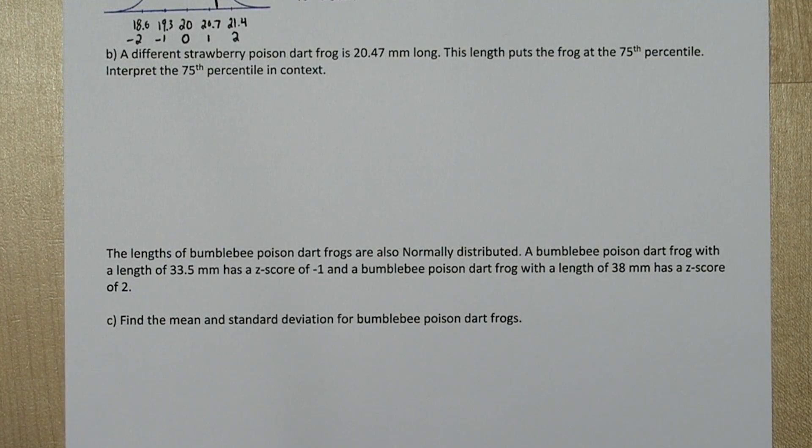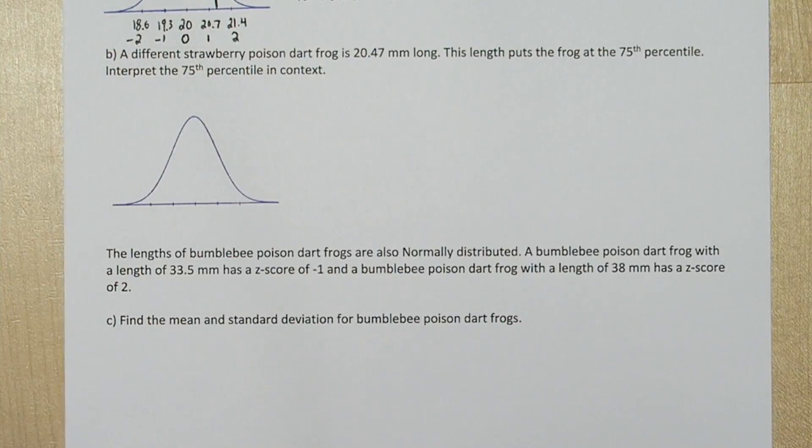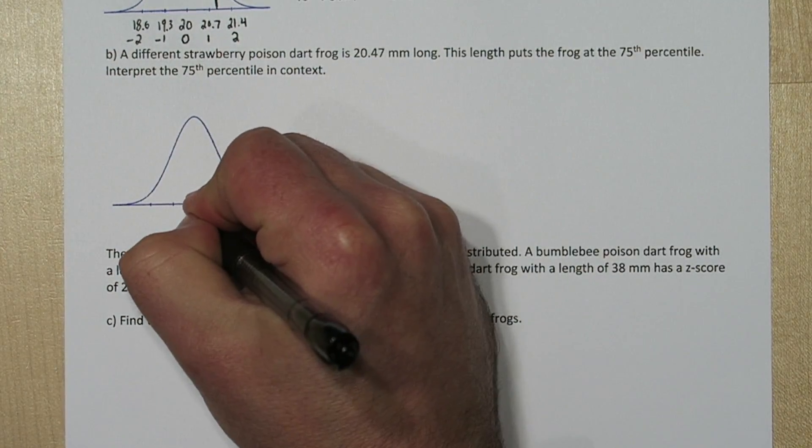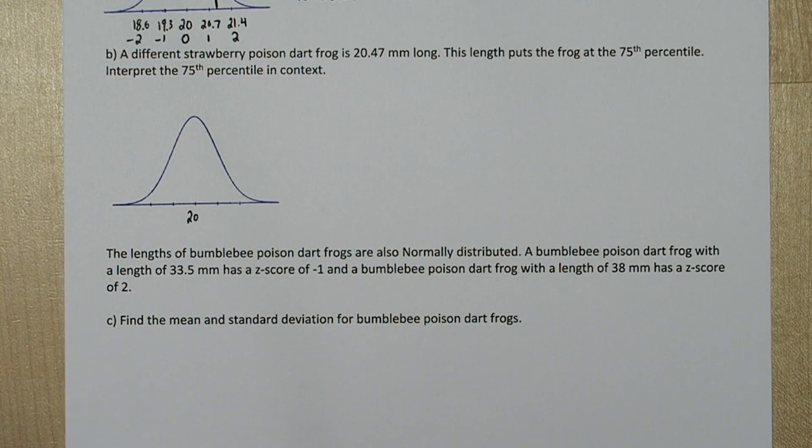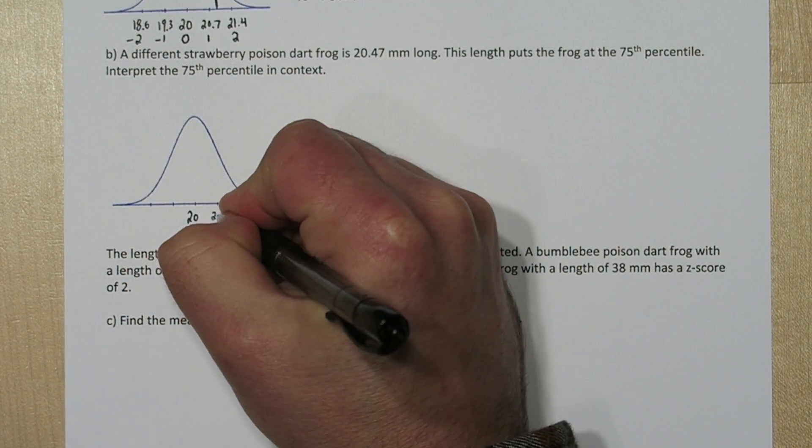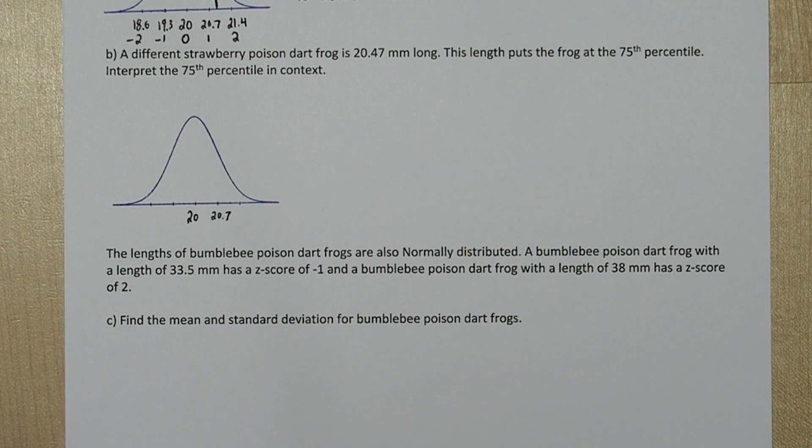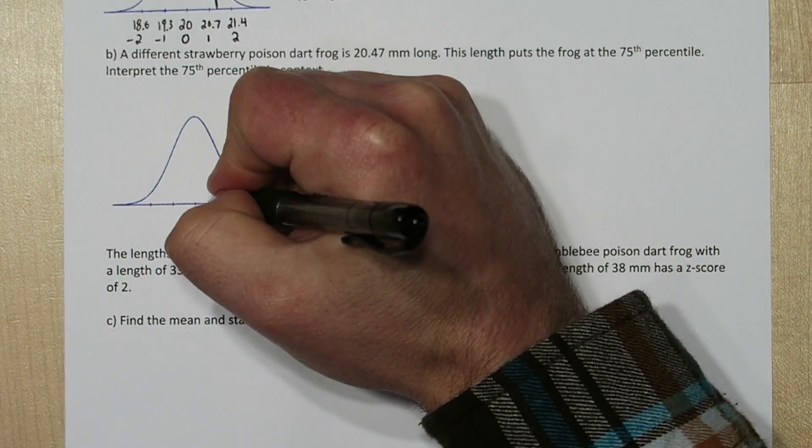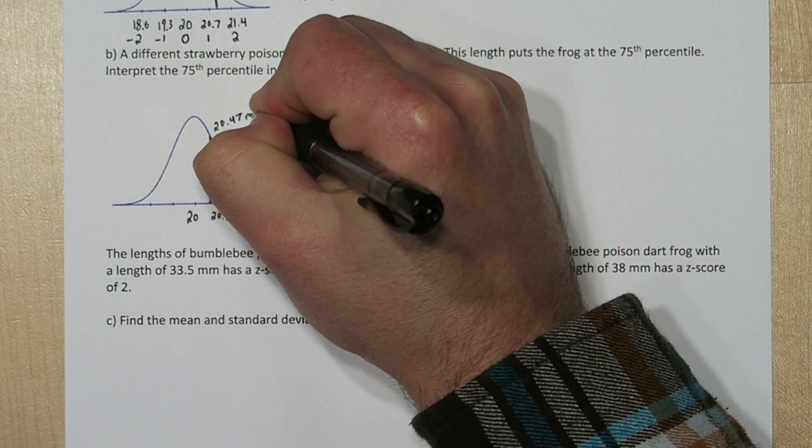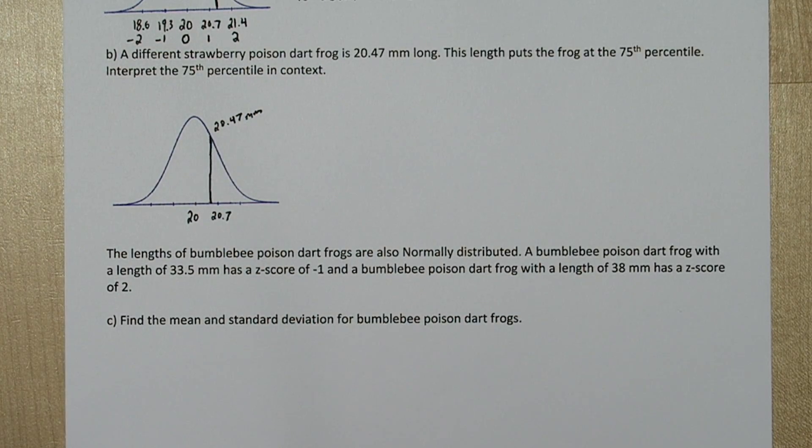To demonstrate what the 75th percentile represents, let's stamp another normal distribution. Now the mean is still 20 right here in the middle, and this is 20.7. So 20.47 would be about here. And if this is the 75th percentile, it means the area to the left is 0.75.